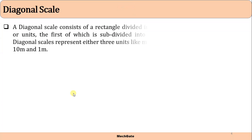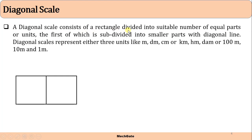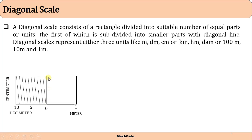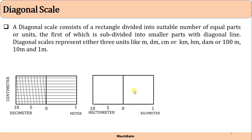A diagonal scale consists of a rectangle divided into a suitable number of equal parts or units, the first of which is subdivided into smaller parts using a diagonal line. A diagonal scale represents three units — like meter, decimeter, centimeter; or kilometer, hectometer, decimeter; or hundred meter, ten meter, one meter. For example, one meter equals 10 decimeters, so we divide that length proportionally into 10 equal parts using the diagonal line. The three units represented are meter, decimeter, and centimeter — or alternatively, kilometer, hectometer, and decimeter.